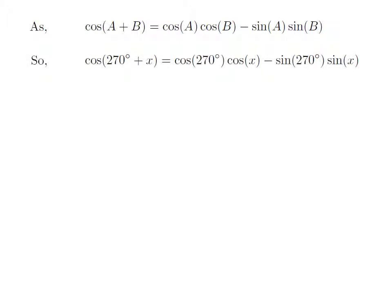Let us apply the above identity for cosine of 270 degrees plus x. Here, A is 270 degrees and B is x.